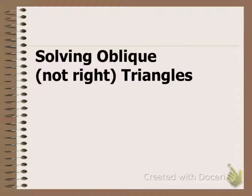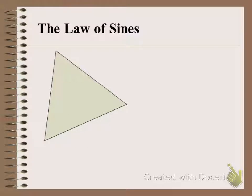We have to have something else to do, and one of those things is called the Law of Sines. Start at the top left of your page and draw a generic triangle, maybe seven or eight lines tall so you have room to label things, because we're going to develop the Law of Sines.